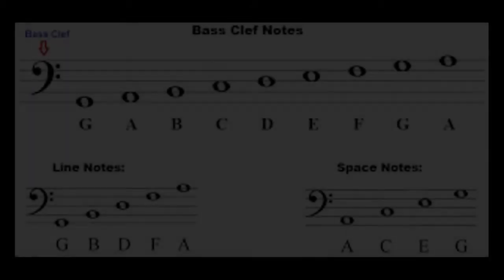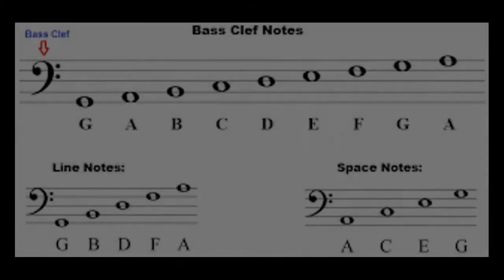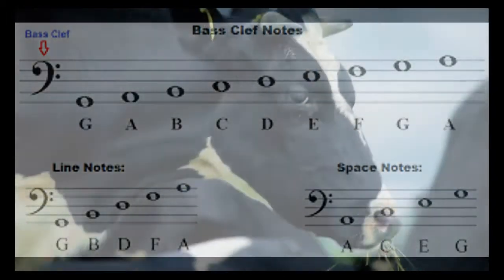The notes in the spaces from bottom to top are A, C, E, and G. All cows eat grass, that's how we remember that one.